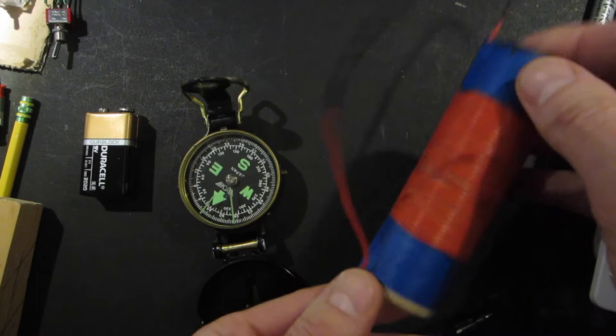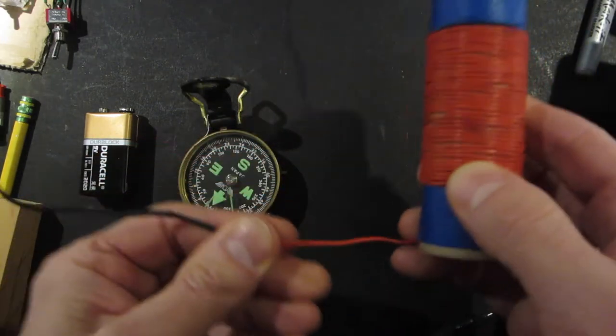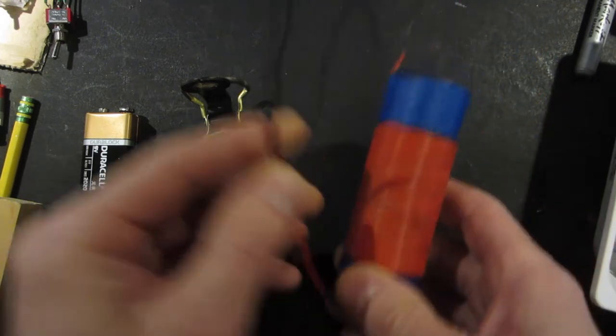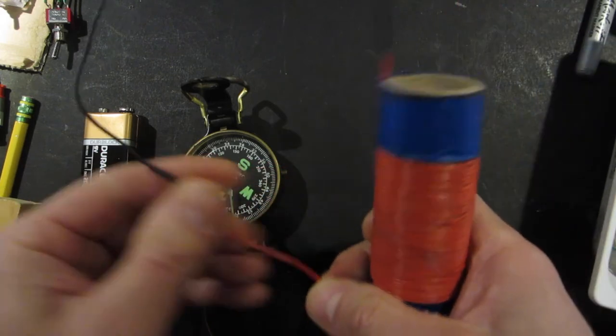This is bell wire, which is often used to wire up doorbells in houses. It's cheap and brittle, and honestly, I don't like it a whole lot, but I had a bunch of it laying around, so I opted to wind my coil with bell wire.